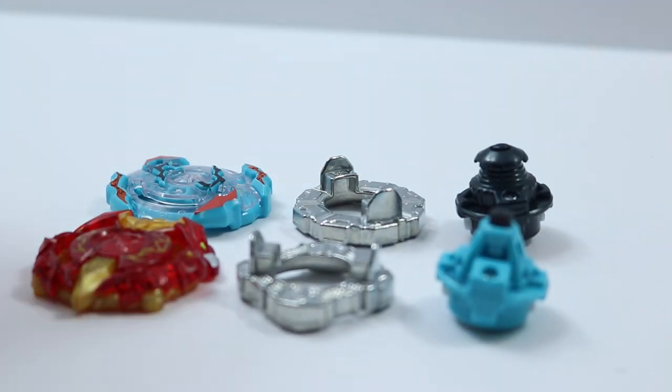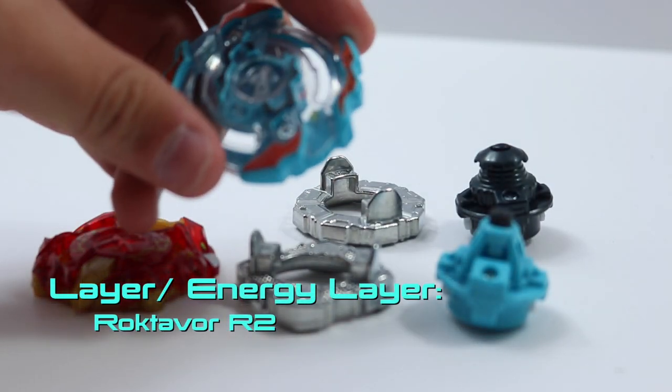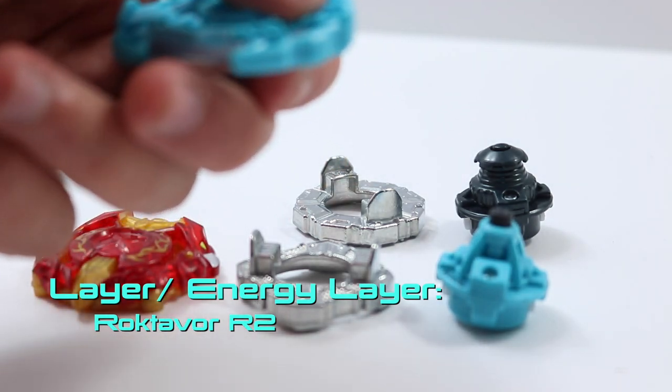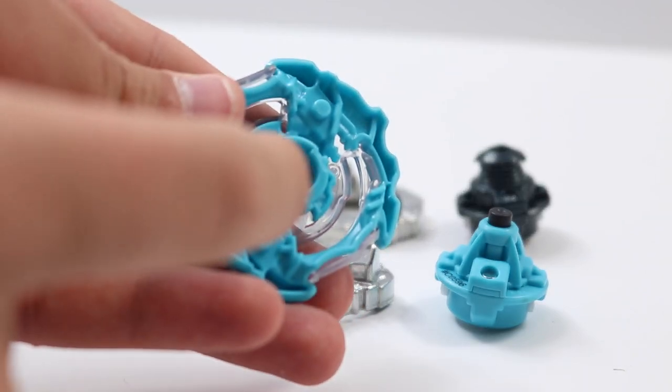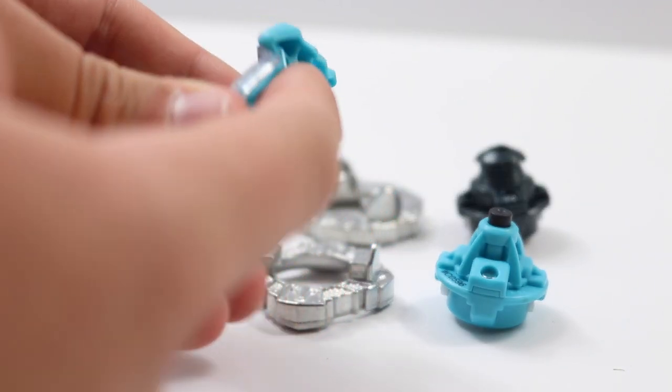So let's go ahead and start with Roktavor. I really like the color on this Beyblade. It's quite interesting seeing little bumps. I don't know if you can see the little bumps on the disc, which I'm not sure why they did that. So be it, Hasbro.